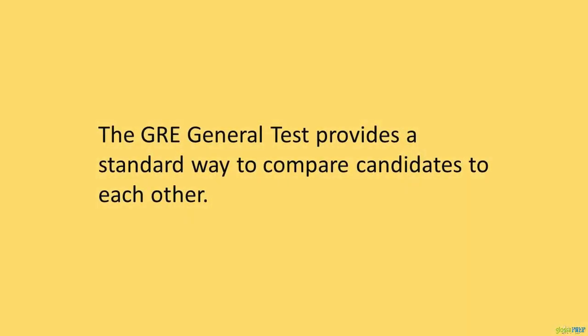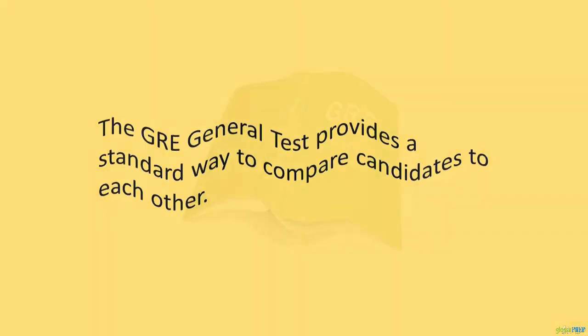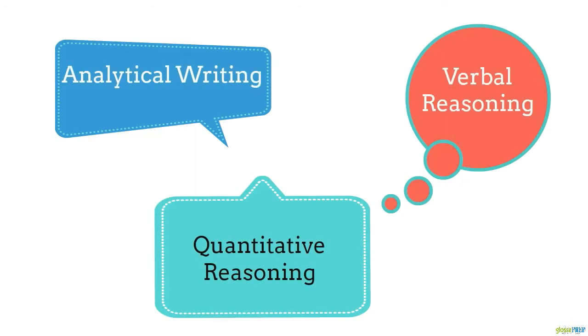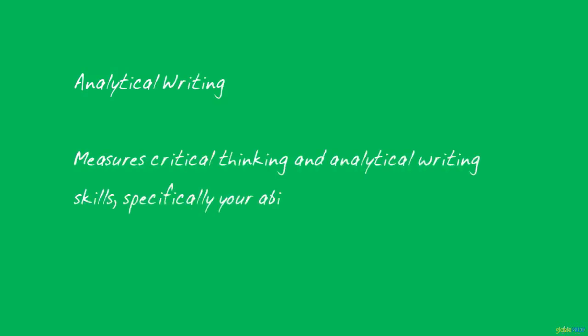GRE stands for Graduate Record Exam, and it's divided into three main sections. Analytical Writing measures your critical thinking and analytical writing skills, specifically your ability to articulate and support complex ideas clearly and effectively.